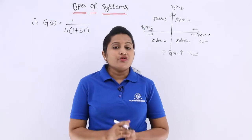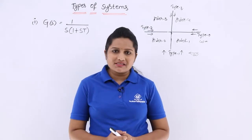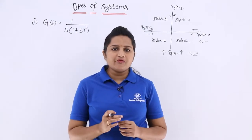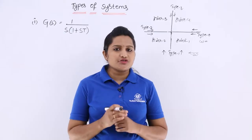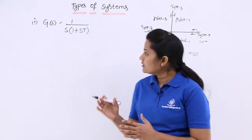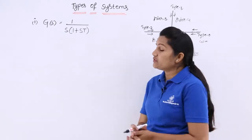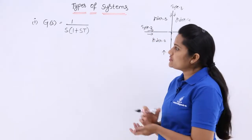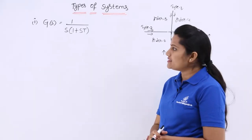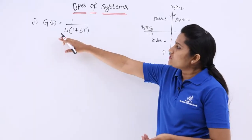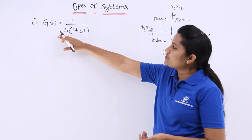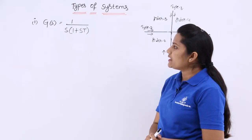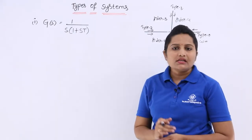In this video, we are going to discuss the shape of a type 1 and order 2 system. Here we are given with a transfer function — a sinusoidal transfer function of a system in the S domain. That is: G(S) = 1 / [S(1 + ST)].